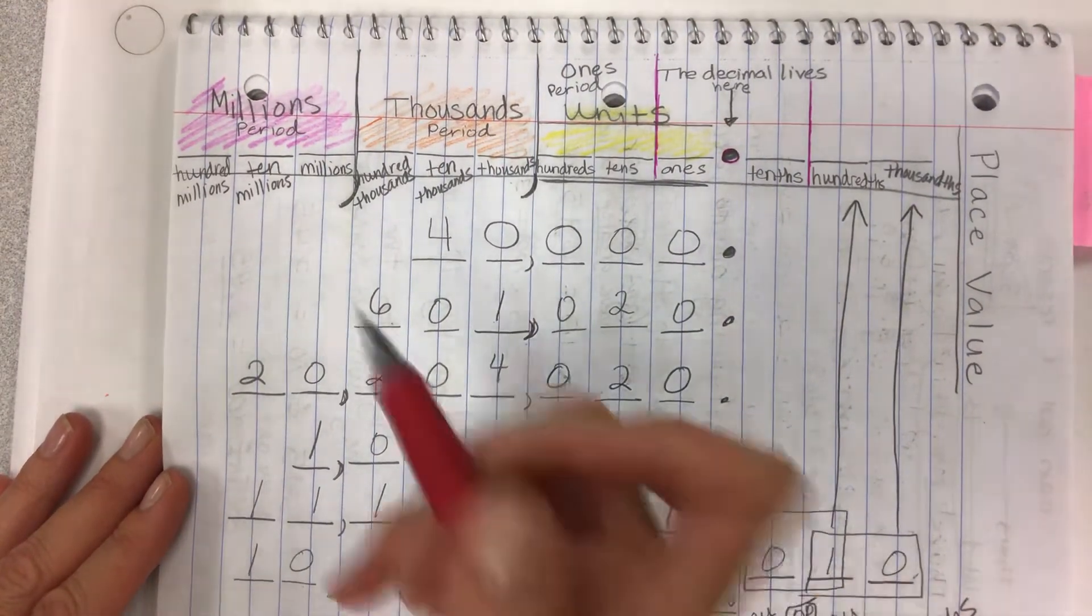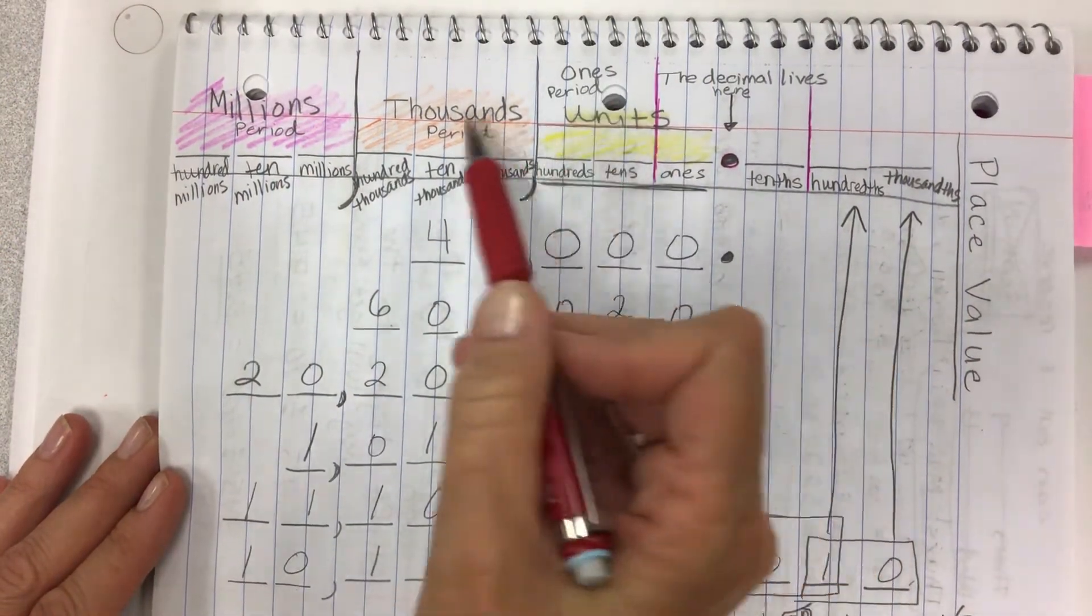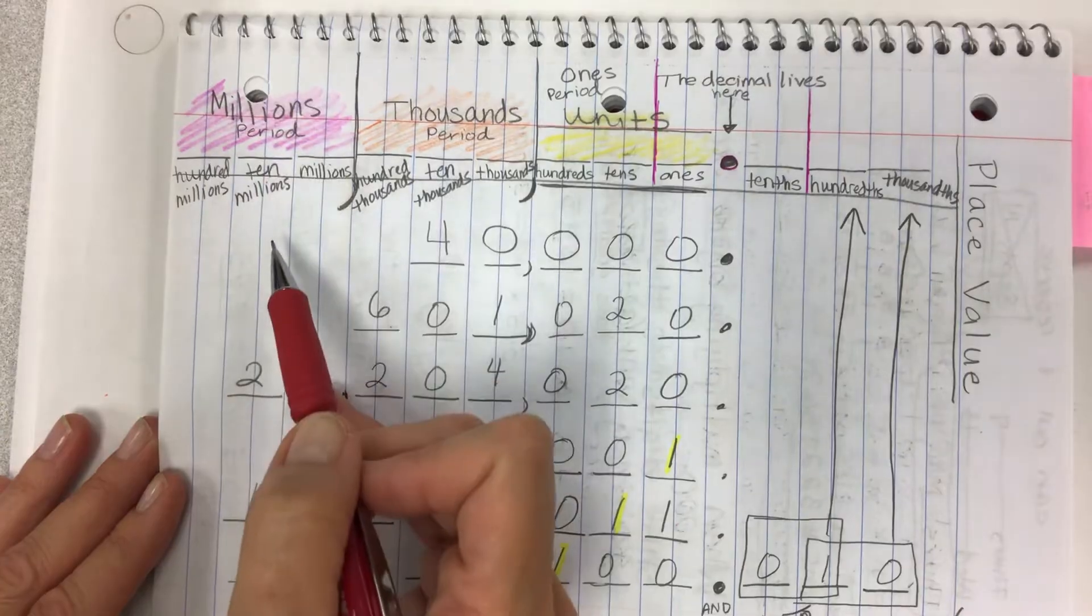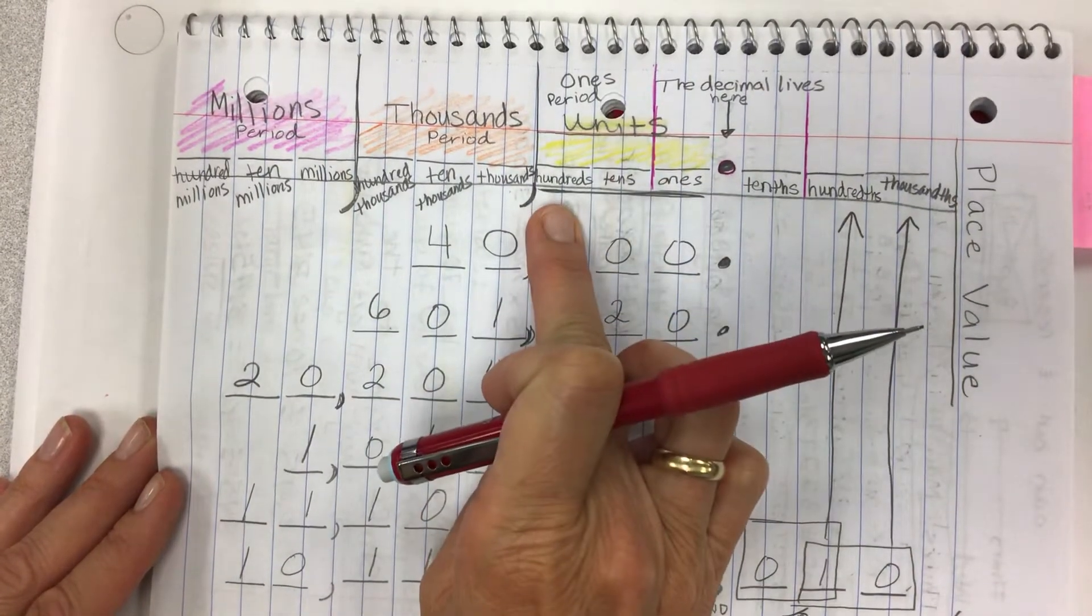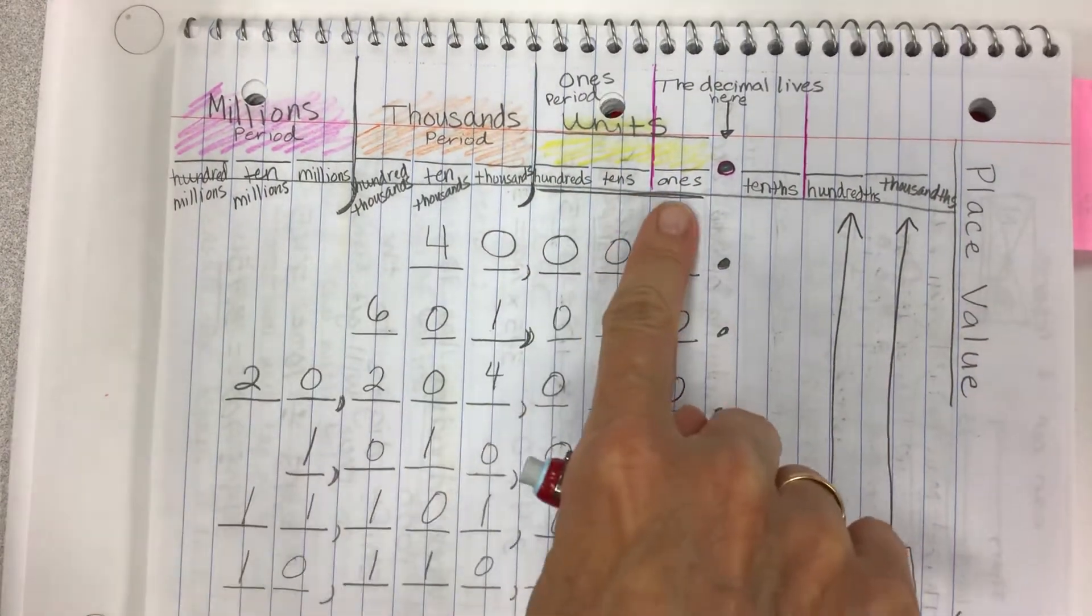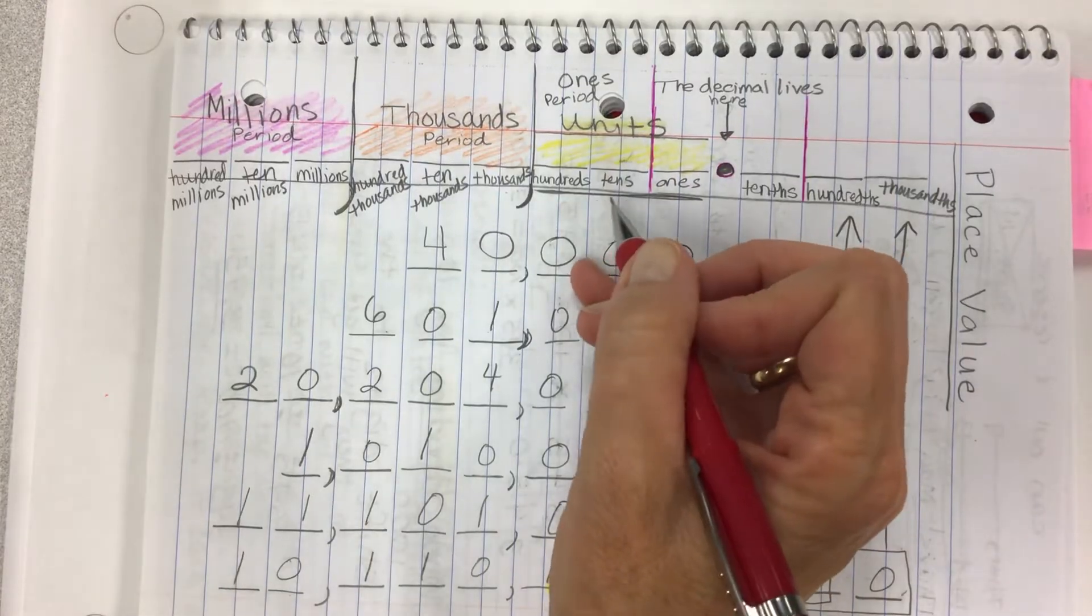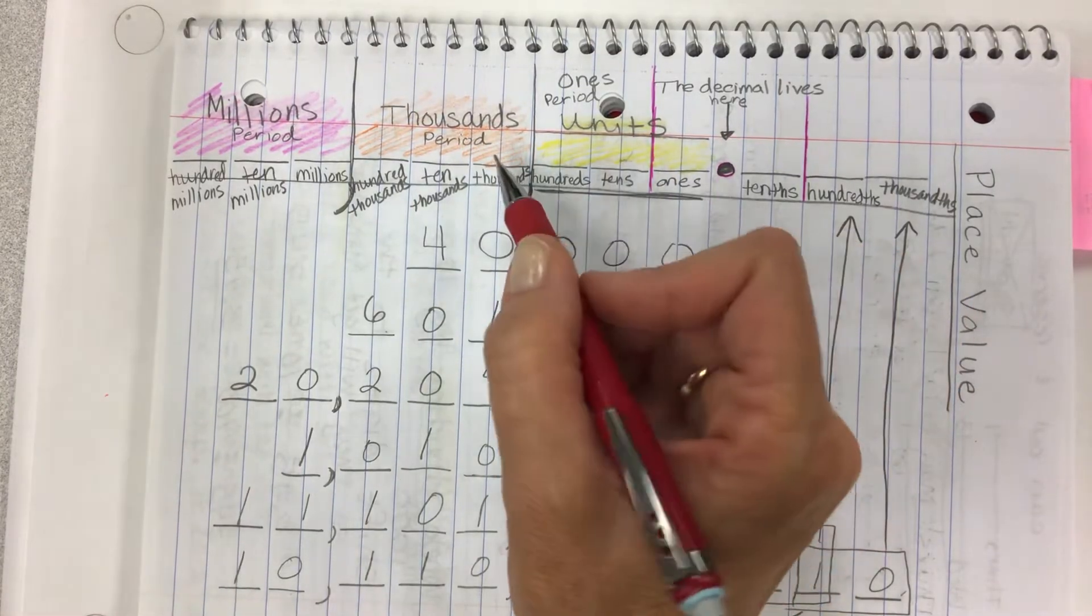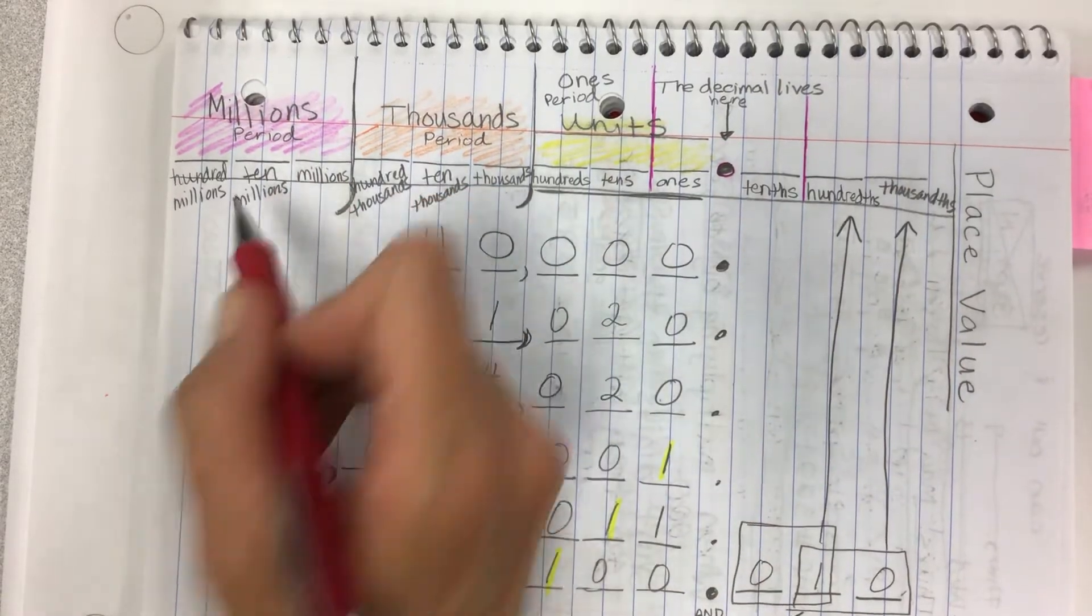Here's the other place value chart. You can always pause the video if needed. With the periods colored, units or ones period, thousands period, millions period. Each period goes ones, tens, hundreds. With the name, except for this one, we don't say one ones, ten ones. You would just say like 40, or 50, or 500, or something like that. But this one you would always say thousands as your label. This one you always have millions as your label.